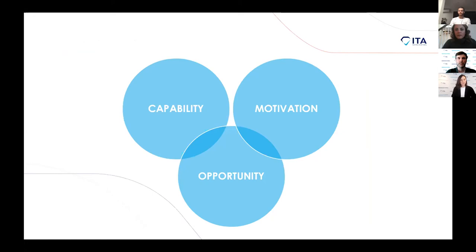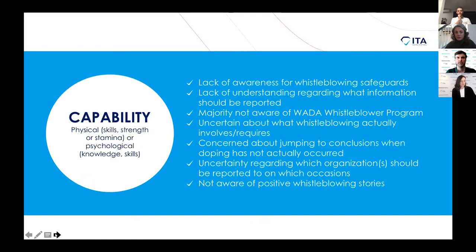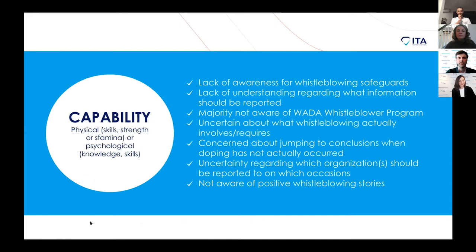When presenting our findings to WADA, we turned to the COM-B model, which breaks down behavior as needing to address Capability, Motivation, and Opportunity. If we want an individual to be equipped and able to blow the whistle on doping, we need to make sure that they have the capability to do it, they have the motivation to do it, and they have the opportunity to do it. There is a lot on this slide — don't panic, this report is available online. I want to highlight some of the things that came through in the research with elite athletes and coaches.